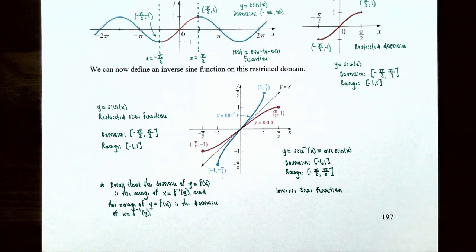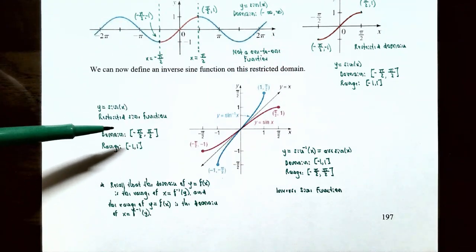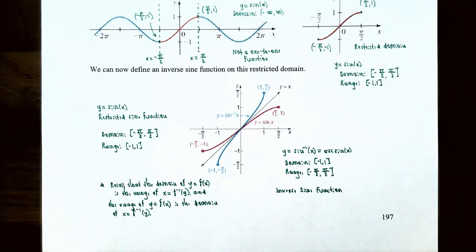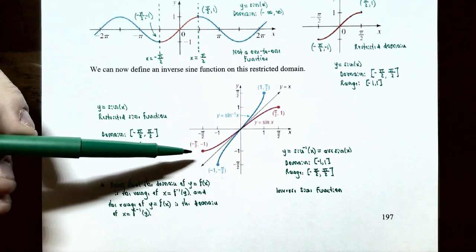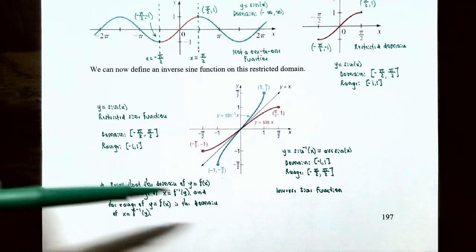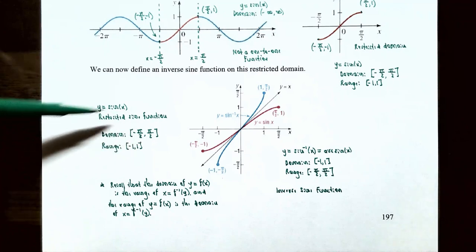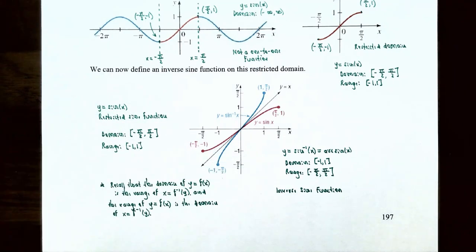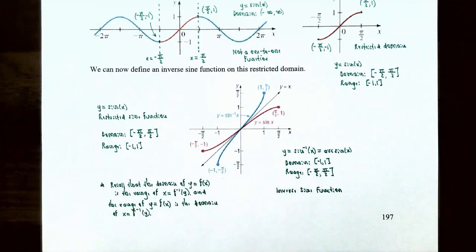Now that we know we can find the inverse function, we define the inverse sine function on this restricted domain. If y = sin(x) is the restricted sine function — with domain [−π/2, π/2] and range [−1, 1] — then reflecting the graph across the line y = x gives the inverse sine function, y = sin⁻¹(x), also called the arc sine function. Notice that the x values go between −1 and 1, and the y values go between −π/2 and π/2.